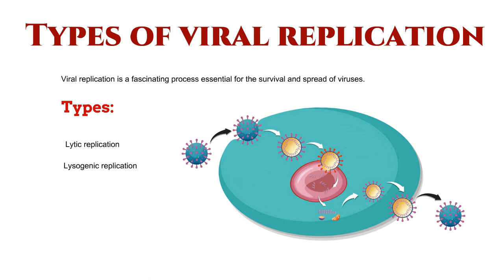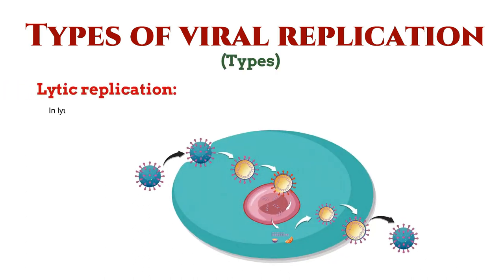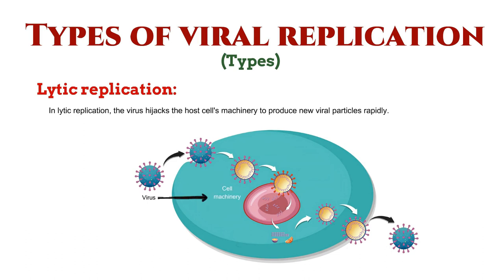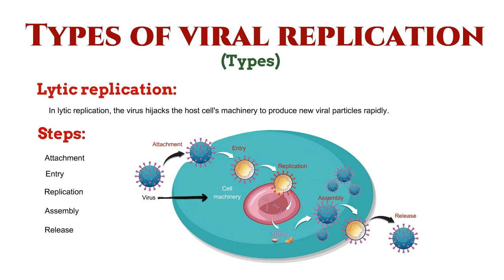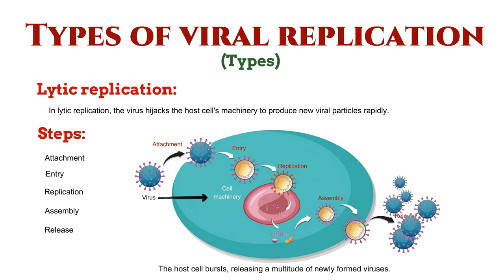Let's delve into these strategies to understand how viruses operate. In lytic replication, the virus hijacks the host cell's machinery to produce new viral particles rapidly. The process involves attachment, entry, replication, assembly, and release. The result? The host cell bursts, releasing a multitude of newly formed viruses.